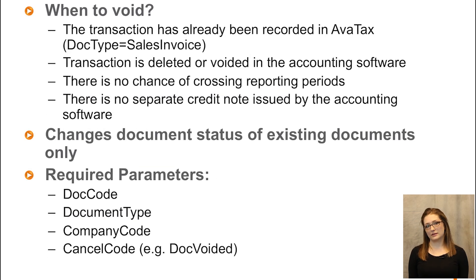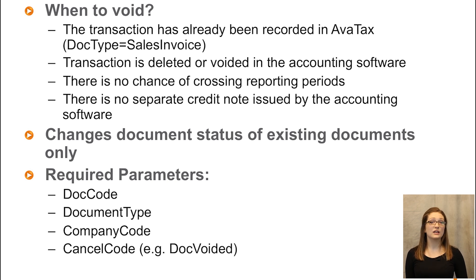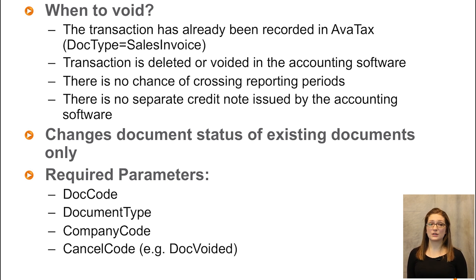Let's talk about voiding documents. You only really want to void documents when a transaction has already been recorded in our system — that is, if you were using doc type Sales Invoice, we have a record of it, and now you need to void it if appropriate. When is it appropriate? When the transaction is deleted or voided in your accounting software, you'll probably want to reflect that on our side. But you don't want to void things if there's any chance of crossing reporting periods or if there's a separate credit note issued by your accounting software. Voiding documents changes the document status of existing documents only. There's a special Cancel Tax API — the required parameters are document code, document type, and company code, which uniquely identify your document, plus a cancel code that controls the final status of the document.